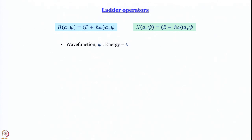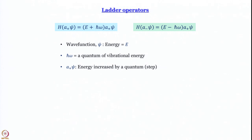Using the ladder operators a⁻ and a⁺ we have these two Schrödinger equations. Starting with a wave function ψ of energy E: a⁺ acting on ψ produces a new wave function higher in energy by one quantum ℏω; a⁻ acting on ψ produces a wave function lower by one quantum. The energy levels are equispaced, so a⁺ and a⁻ take you up or down this energy ladder — that is why they are called ladder operators.